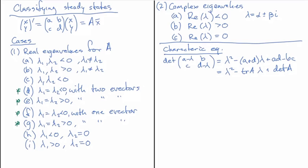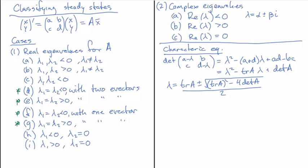We can always solve the characteristic equation using the quadratic formula: lambda equals trace(A) plus or minus the square root of trace(A) squared minus 4·det(A), all divided by two. Complex eigenvalues occur only when 4·det(A) is bigger than trace(A) squared, making the discriminant negative. Once we have complex eigenvalues, the real part equals trace(A) divided by two.